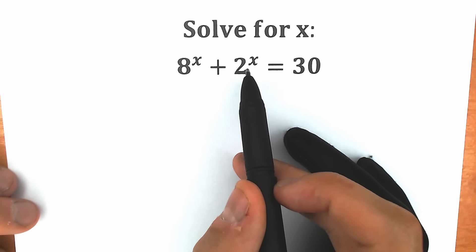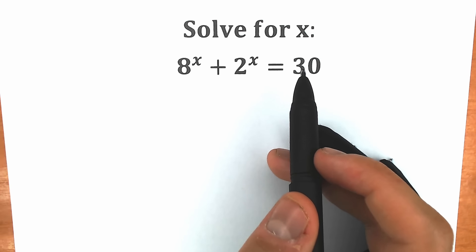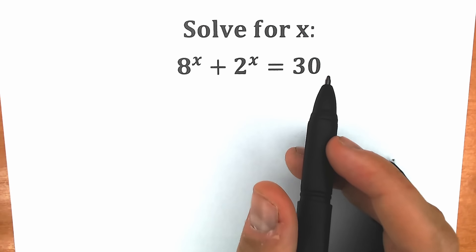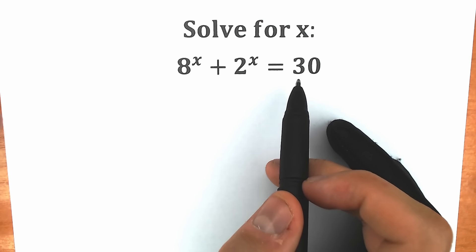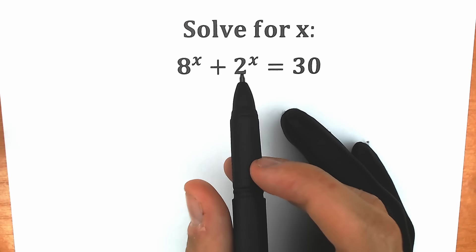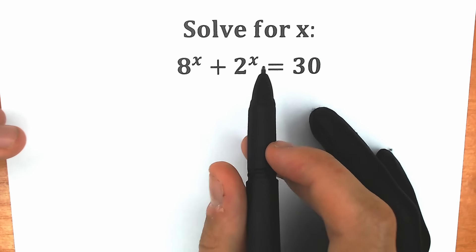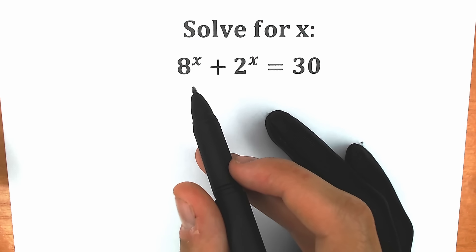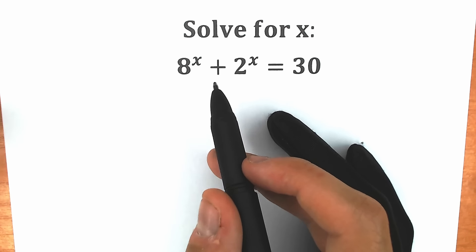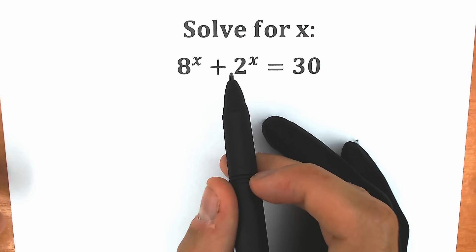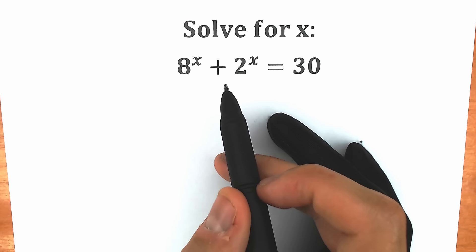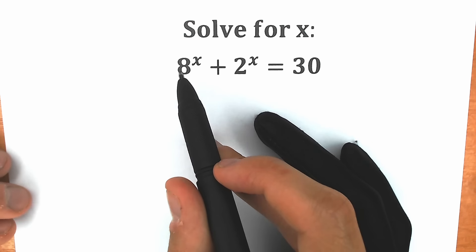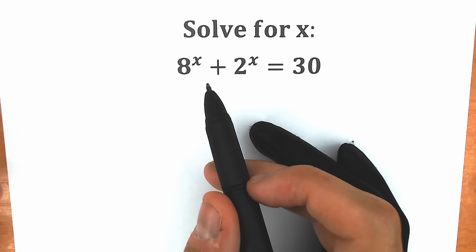So 8 to the x plus 2 to the x equal to 30. Let's think about how we can solve this. First of all, we have different bases — 8 and 2 — so it's hard to work with them because it's really great to have the same base. If you look closely on the left side, we have 8 and we have 2. From school you need to know that 2 cubed equals 8. So let's change this 8 — instead of 8, let's write 2 cubed.